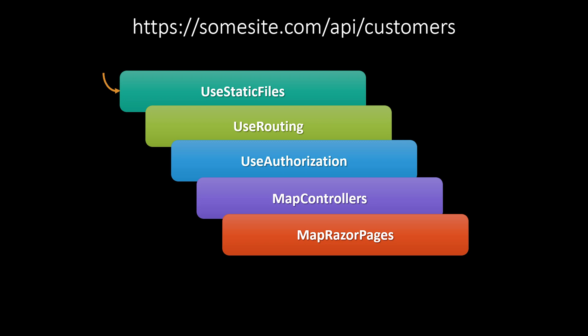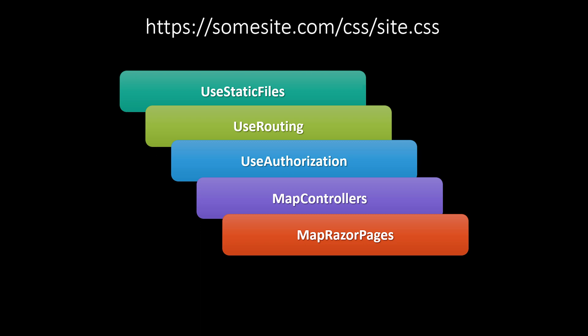If we look at an API, we have that same process. The request comes in. Static file says 'nope, not me.' Routing and authorization add some context. Map controllers says 'I know this route' and calls the controller to fulfill the request, then returns. Because map controllers could handle it, Razor pages middleware was never called — and that's intentional. Similarly, if we have a static file request, static files says 'I know that file, let me return it,' fills the response, and returns without any of the rest of the middleware being called.